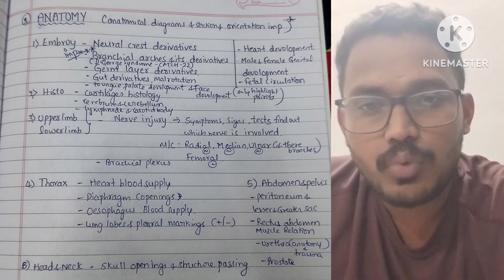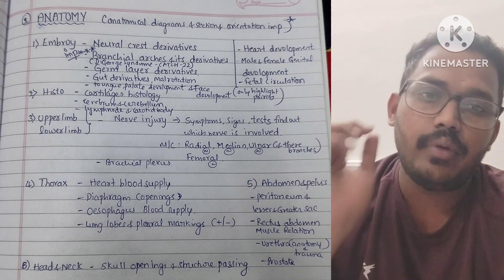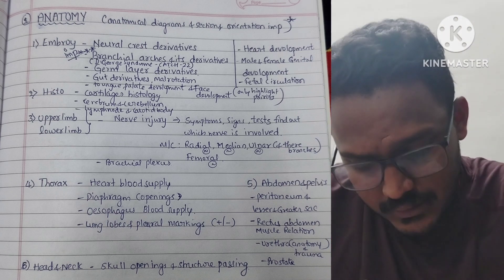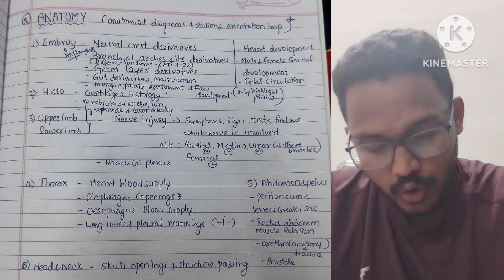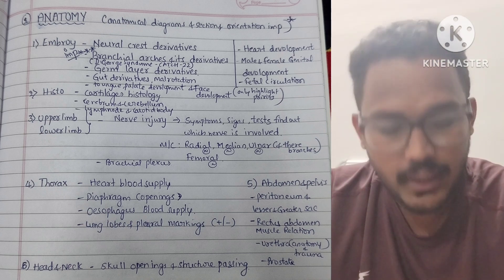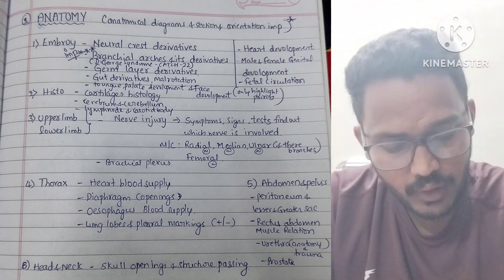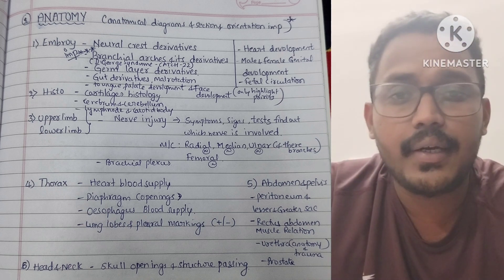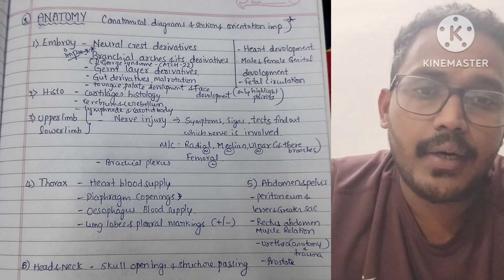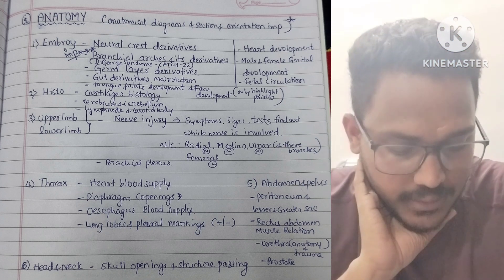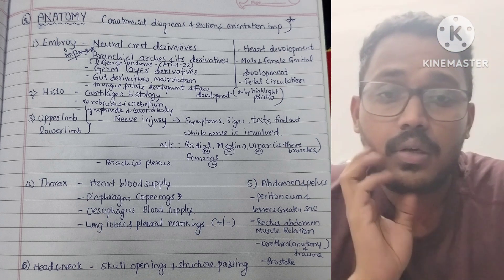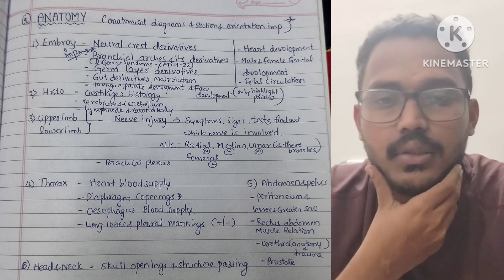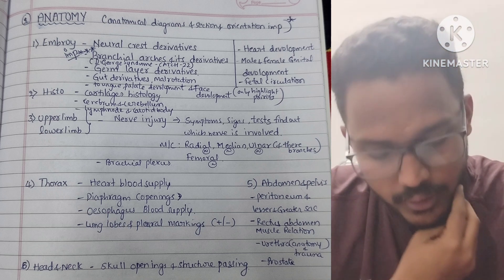From thorax, blood supply of the heart is very important. Diaphragm openings are very important. Esophagus blood supply is very important. Lung lobes and pleural markings are important. In abdomen and pelvis, peritoneum, lesser sac, and greater sac relations are important. The rectus abdominis muscle attachment and its relations are very important.